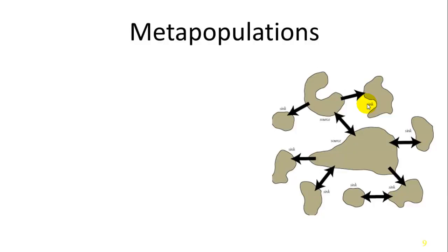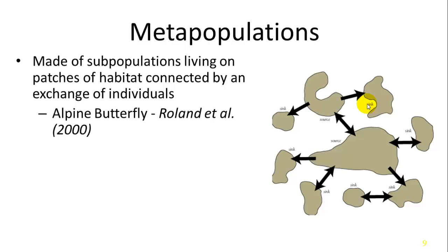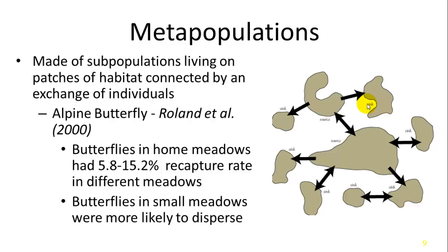Populations will also change in response to patches of suitable habitat. Meta-populations are subpopulations living in patches connected through corridors — small areas where they can disperse between them. For example, alpine butterflies inhabit mountaintops and travel to different mountains, but there is no continuous habitat between them. Butterflies in their home meadows had about a 5.8% to 15.2% recapture rate when found in different meadows. The smaller the patch, the more likely they were to disperse to another meadow.